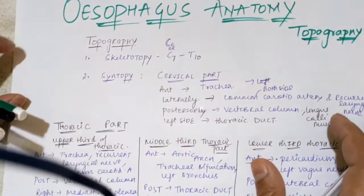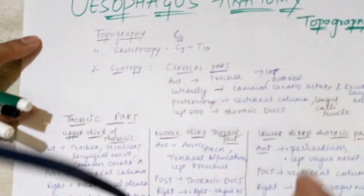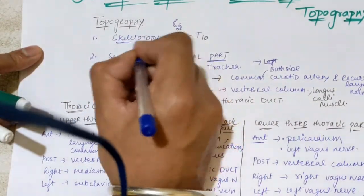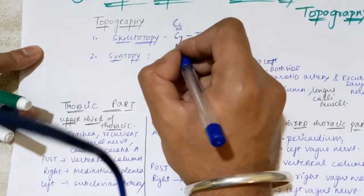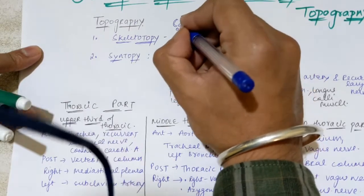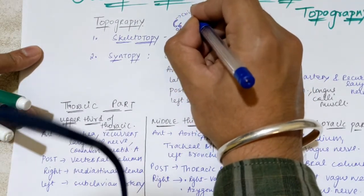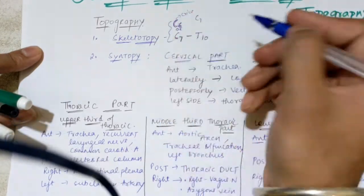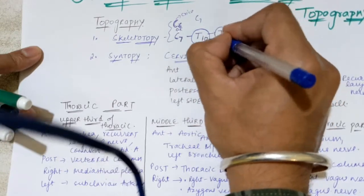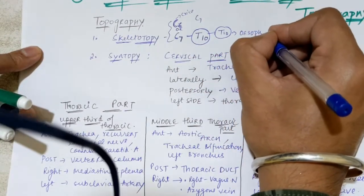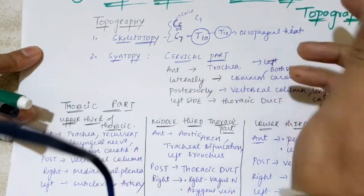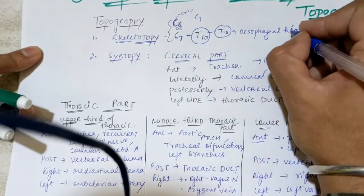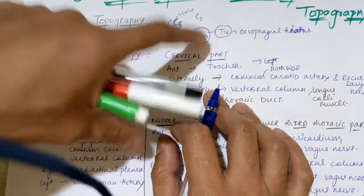Everything is written here as a theoretical representation of topography. For skeletotopy: the esophagus extends from the level of C6 or C7 — because the lower border of the cricoid cartilage where it starts is at C6, though some books say C7 — and ends at the level of T10, where the esophagus pierces the diaphragm at the esophageal hiatus. The diaphragm is a thin muscular wall separating abdominal organs from the thorax.